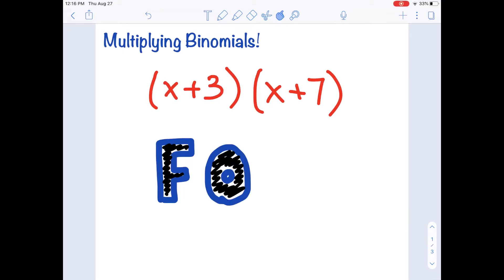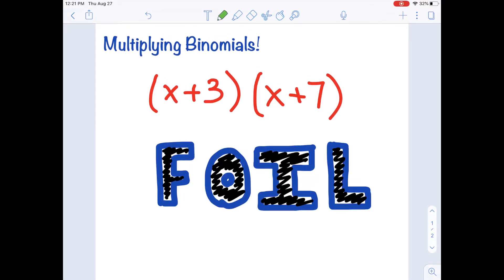To do this we remember the acronym FOIL. This helps to remember our steps when multiplying two binomials.